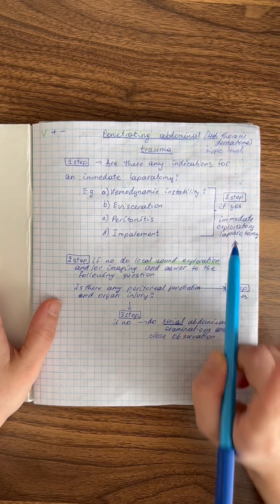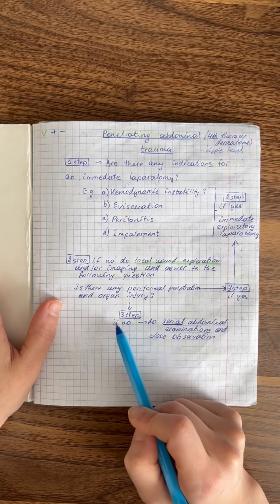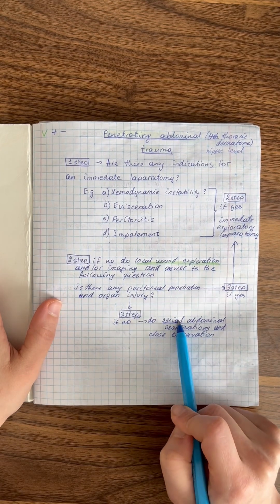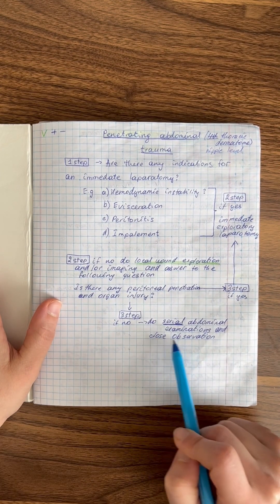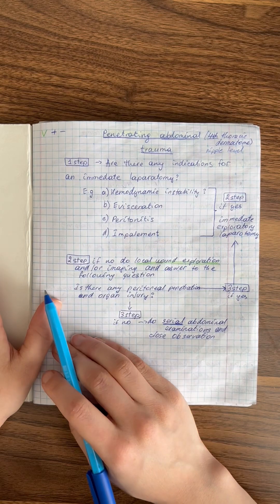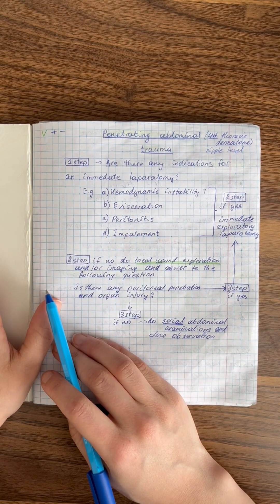If no peritoneal penetration is found, the next step is serial abdominal examinations and close observation. Clean the wound and continue observation with serial abdominal exams.